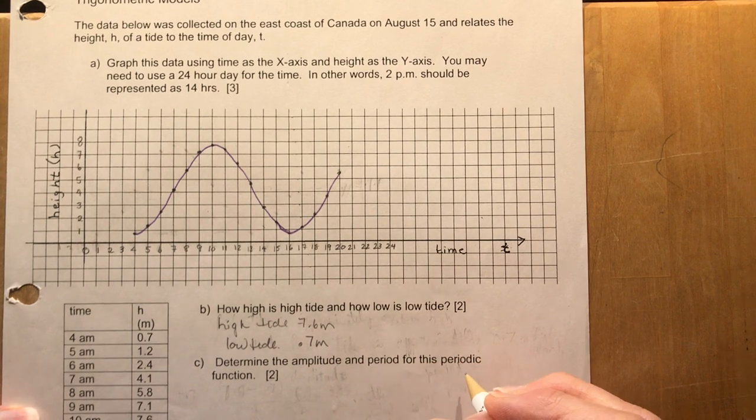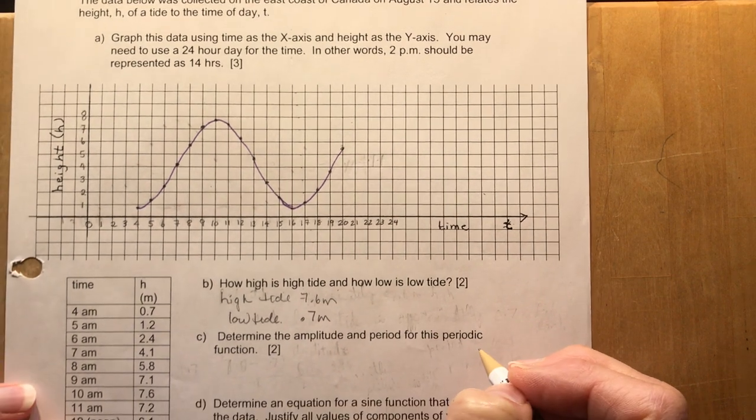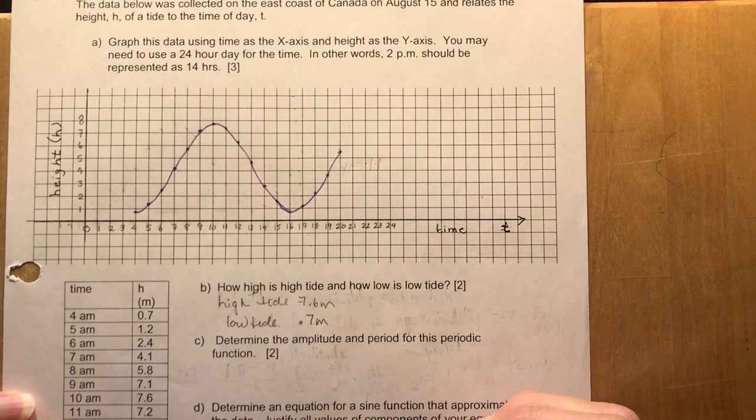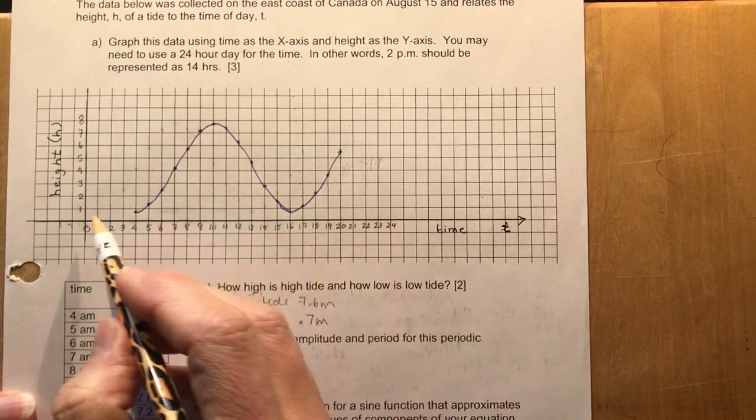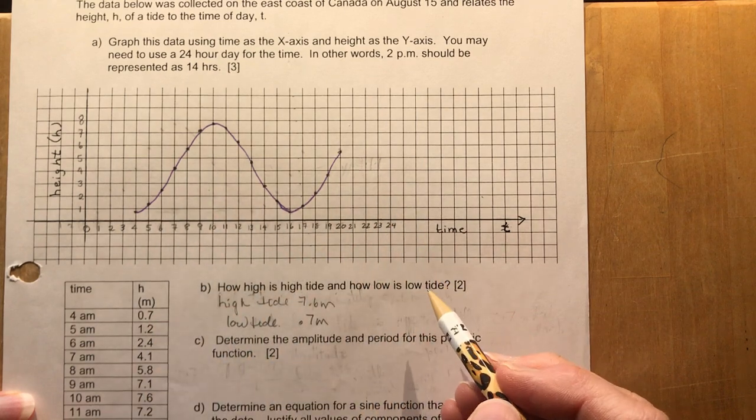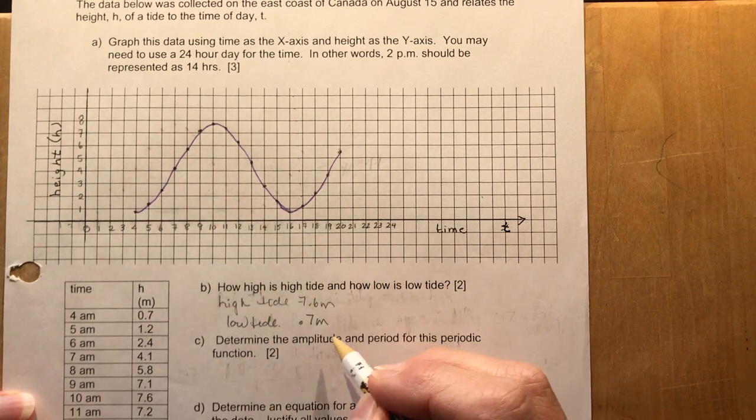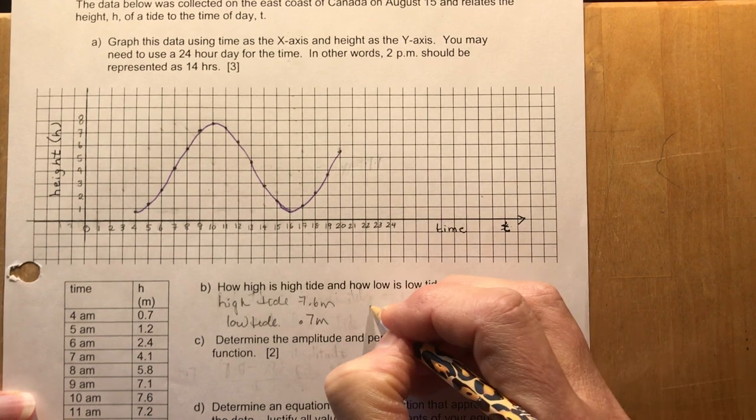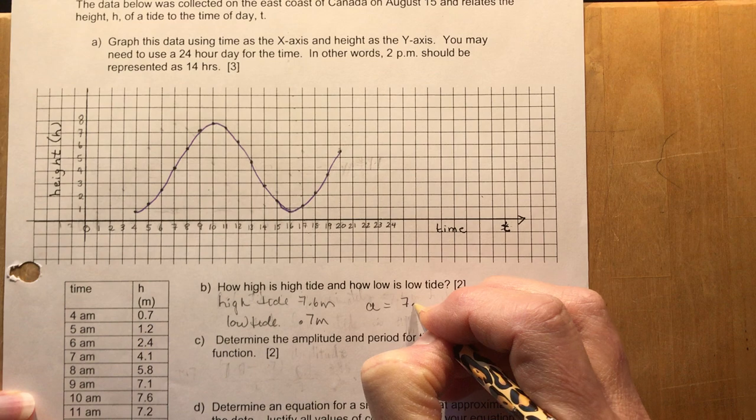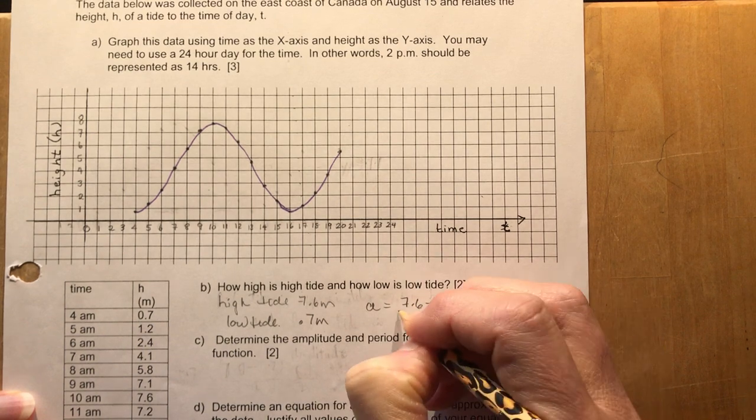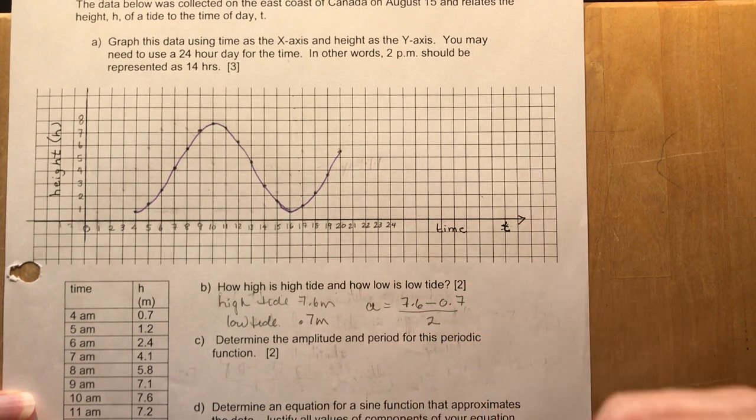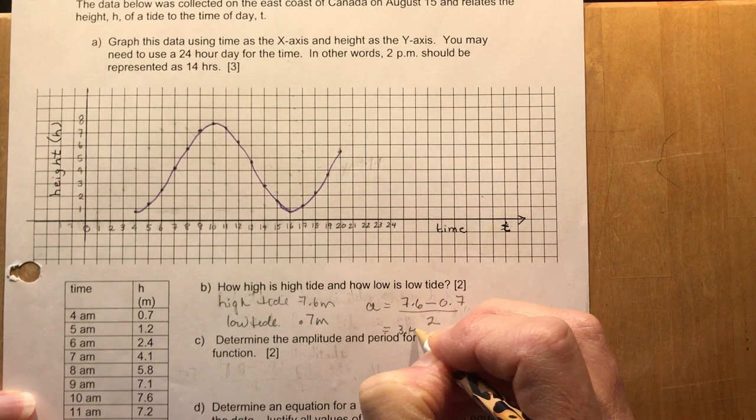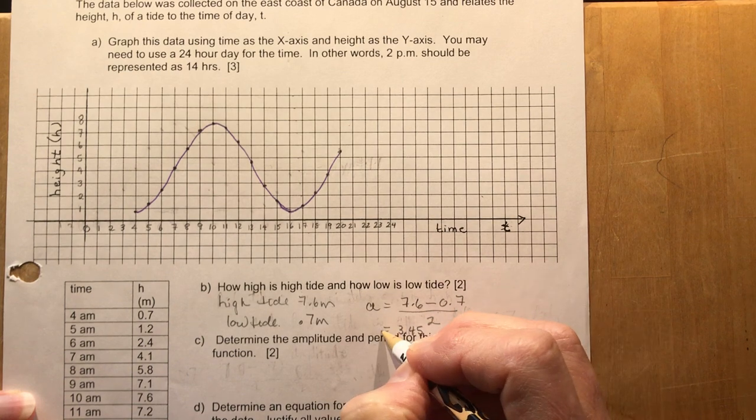Determine the amplitude and period for this periodic function. For the amplitude we might want to figure out where the axis is going to be. I have 7.6 and it goes down to 0.7, so the amplitude is going to be 7.6 minus 0.7 divided by 2. That's going to give you 3.45, so that's your a value.